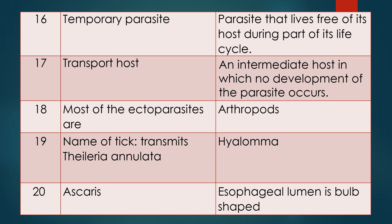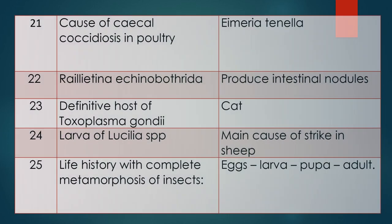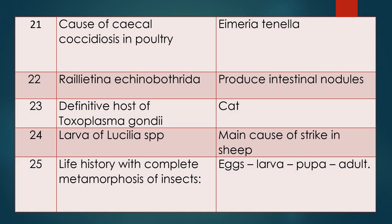Question twenty-one: Commonly asked — cause of cecal coccidiosis in poultry. Answer is Eimeria tenella. Question twenty-two: Raillietina echinobothrida — they produce intestinal nodules.